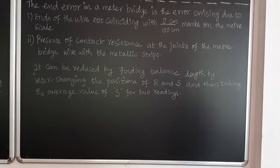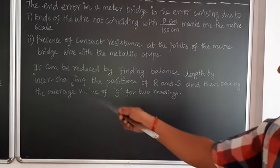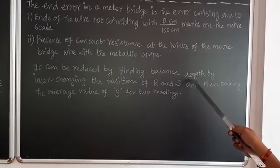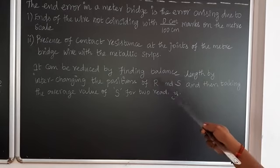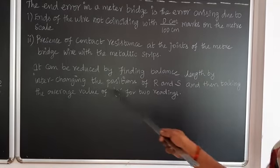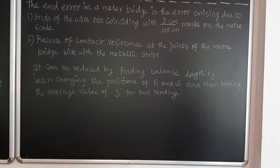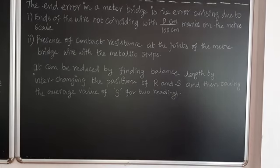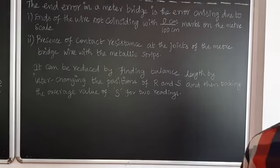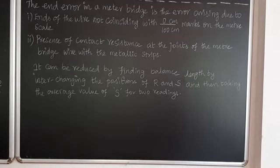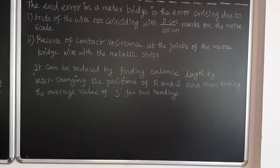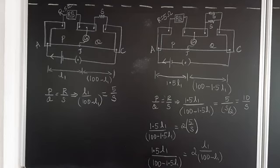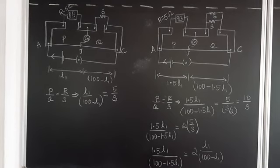To avoid this end error, it can be reduced by finding the balance length — the null point — by interchanging the position of R and S, and then taking the average value of S for two readings. This is how we can avoid end error.